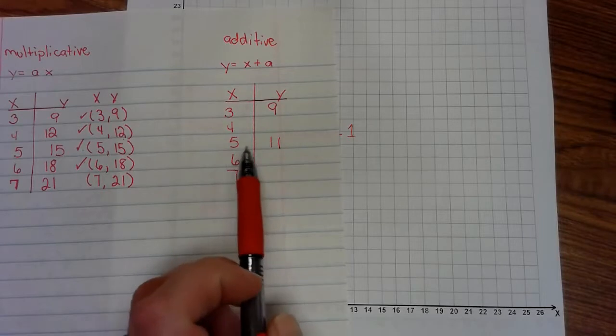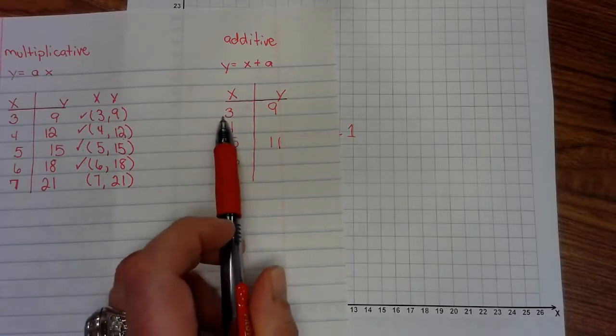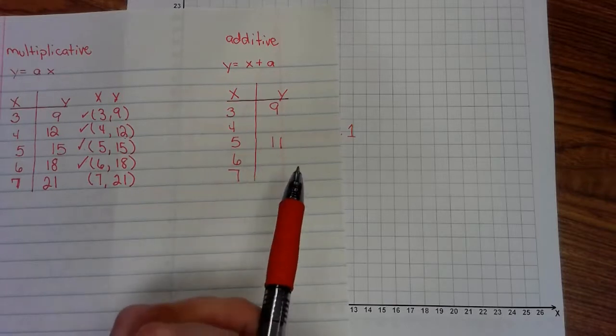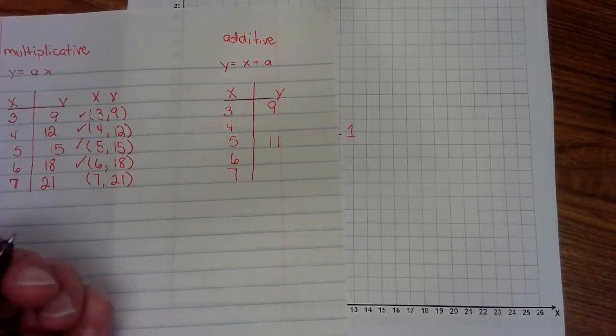I see my formula and I know that I'm adding. I have 3 and 9, 5 and 11. How did I get from 3 to 9? I'm adding 6. I added 6.